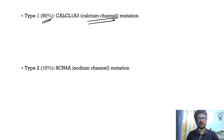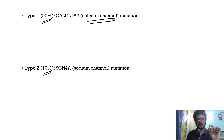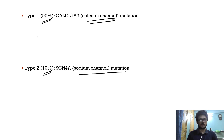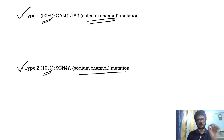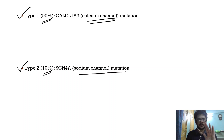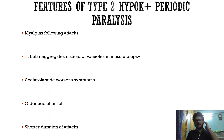Hypokalemic periodic paralysis is a calcium channelopathy 90% of the time. Rarely, in 10% of cases, it can be due to sodium channel mutations. The most common type caused by calcium channel mutation is Type 1, and the rarer sodium channel type is Type 2. For MCQ purposes: hypokalemic periodic paralysis is a calcium channelopathy, hyperkalemic is a sodium channelopathy.